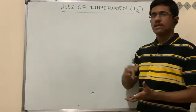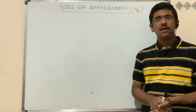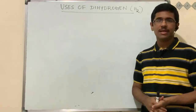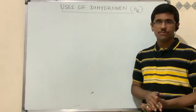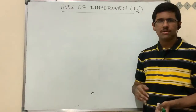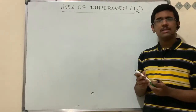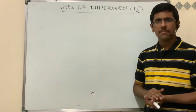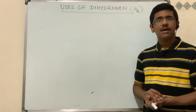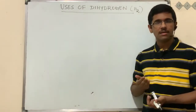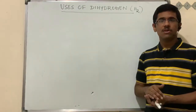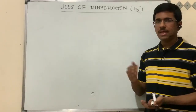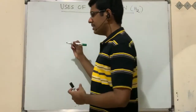Now we are going to study about the uses of dihydrogen. Hydrogen gas has lots of uses in industries. We'll discuss briefly, because in the previous video on chemical properties of dihydrogen we had discussed almost all the necessary chemical properties, and there I explained many uses of hydrogen — like hydrogenation of vegetable oil to get vegetable ghee, and many other reactions.